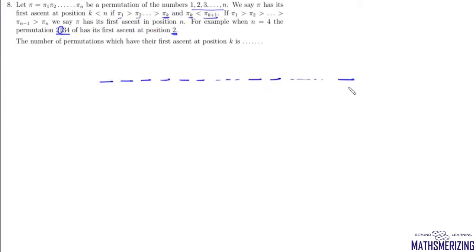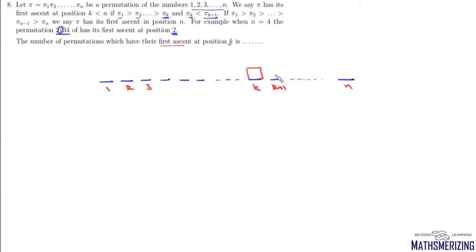Suppose we have n positions: 1, 2, 3, ..., k, k+1, ..., n. We need to find the number of permutations so that the first ascent occurs at position k. That means all numbers in positions 1 through k occur in descending order, and the number at position k+1 must be greater than the number at position k.